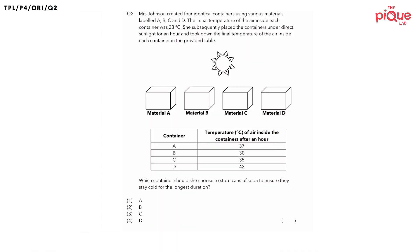Question 2 states that Mrs Johnson created four identical containers using various materials labelled A, B, C and D. The initial temperature of the air inside each container was 28 degrees Celsius. She subsequently placed the containers under direct sunlight for an hour. She also took down the final temperature of the air inside each container in the provided table.